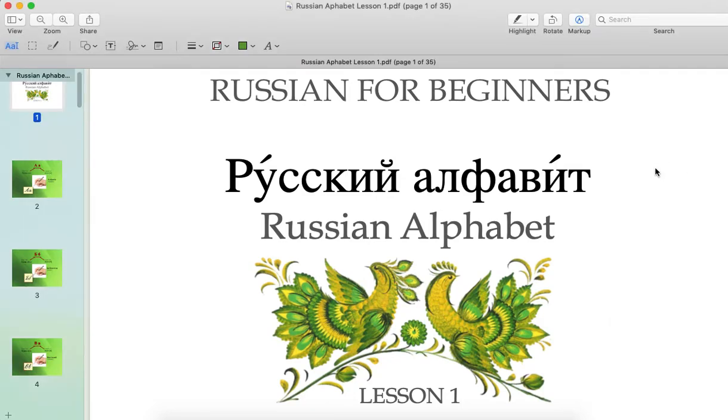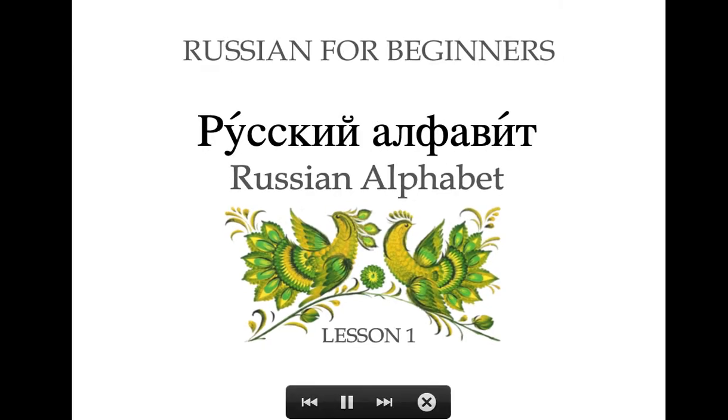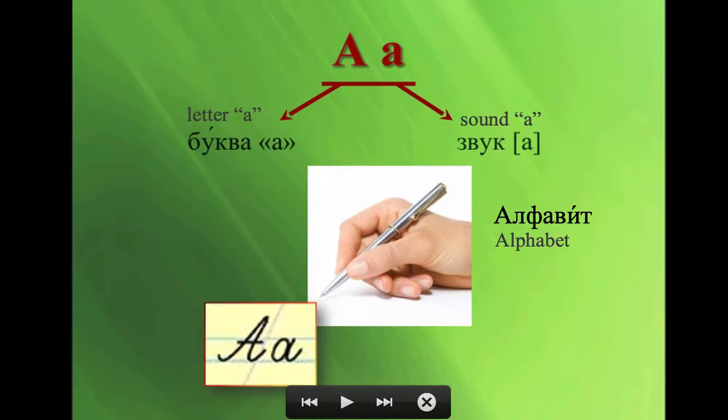Русский алфавит. On top we have the print version of the letter, uppercase and lowercase. On the left it's the name of the letter, on the right the sound of the letter, going down an example. And at the bottom is the handwritten or the script version of the letter.